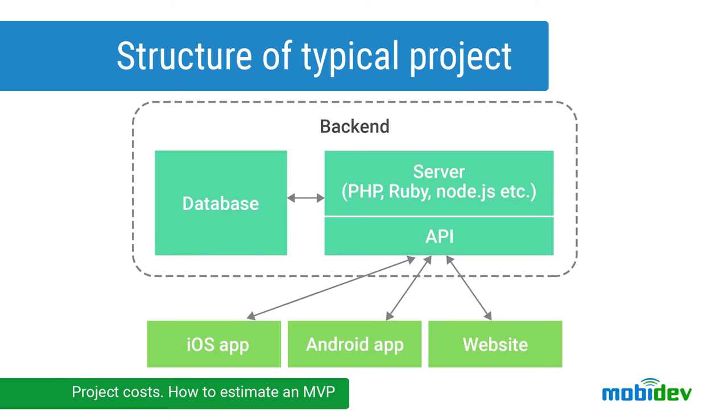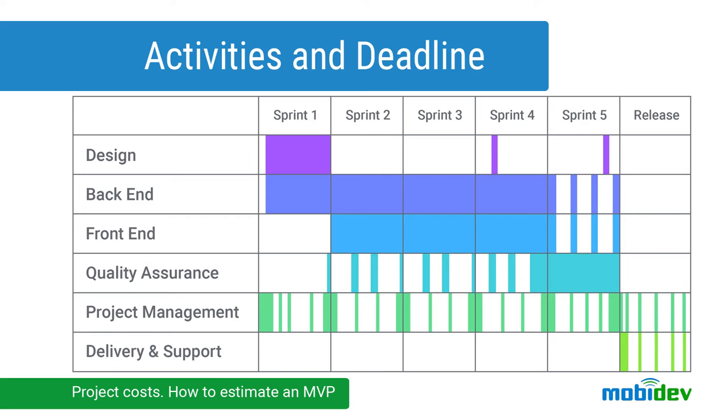Besides the cost, you also want to know the deadlines of your project, and scope of work isn't proportionate to its duration. Typically a complex product consists of an iOS application, Android application, backend, website, etc. During the project, the team will work on multiple activities. In many cases the backend takes the major bulk of time and efforts. Obviously, an application with a backend cannot be finished earlier than the backend itself. In such cases, it's reasonable to start backend development earlier to finish them at the same time.